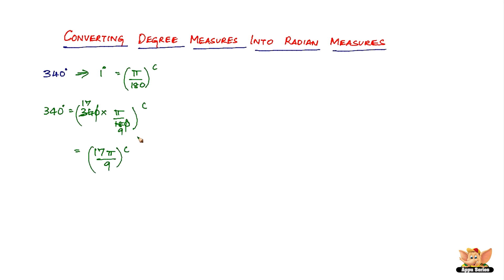That's all — you just stop here as far as the radian is concerned. When converting a degree measure into a radian measure, you do not substitute the value of π as 22/7, as you would for degrees. So 340 degrees converted to radian measure is 17π/9 radians.